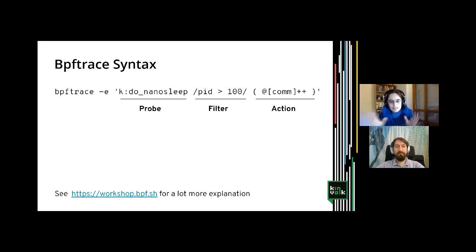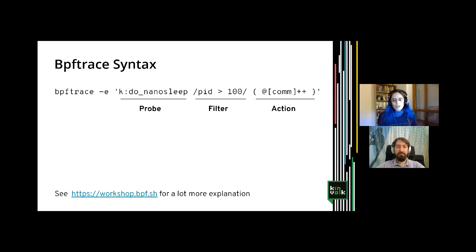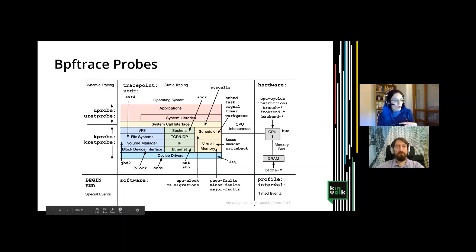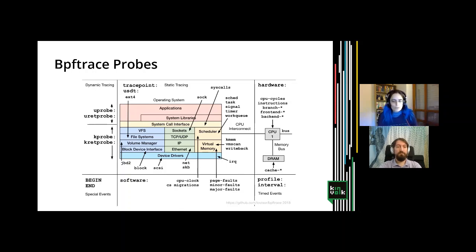This is just the basic syntax — these expressions can get really complex. For more details, workshop.bpf.sh is a great workshop that goes into a lot of details about bpftrace. This diagram shows some of the BPF probes and how they relate to the operating system. We saw the kprobe for kernel functions. We can also trace things in user space using uprobe or uretprobe, trace syscalls, operations on block devices, network packets, CPU cycles, and more. Trace points are points in kernel code that kernel maintainers have identified as interesting for debugging. They tend to be more stable than kernel functions — the kprobe's function name or parameters might change between kernel versions, whereas trace points are more deliberately maintained.